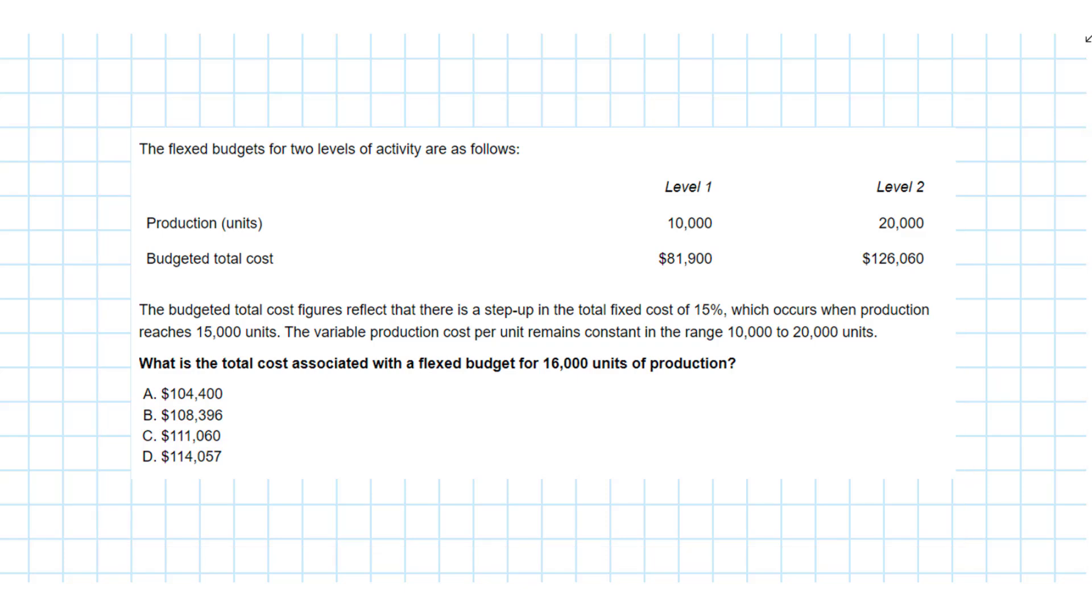What is the total cost associated with a flexed budget for 16,000 units of production? If you remember, a total cost has a fixed cost abbreviated FC and then a variable cost abbreviated VC.